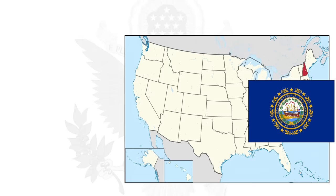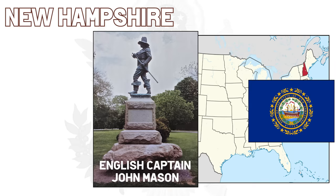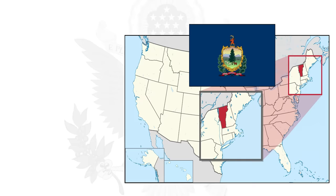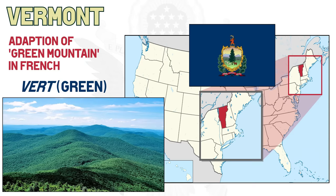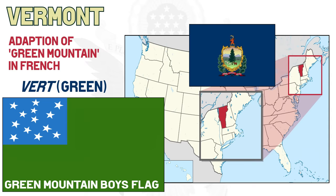New Hampshire was named by English Captain John Mason, who had gotten a land patent to establish a colony in the area. After doing so, he named it New Hampshire after the county of Hampshire in England. Vermont's name comes from the combination of two French words — vert and mont — meaning 'green mountain.' Vert in French means 'green' and mont means 'mountain,' likely because of the green mountains that characterize the state. In fact, the short-lived independent Vermont Republic used as its ensign the green mountain boys flag.